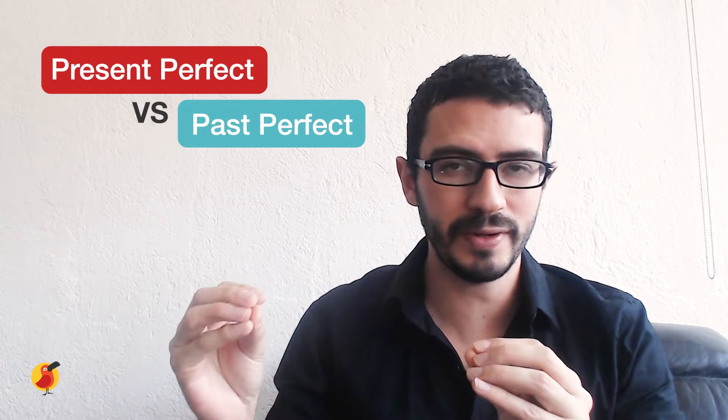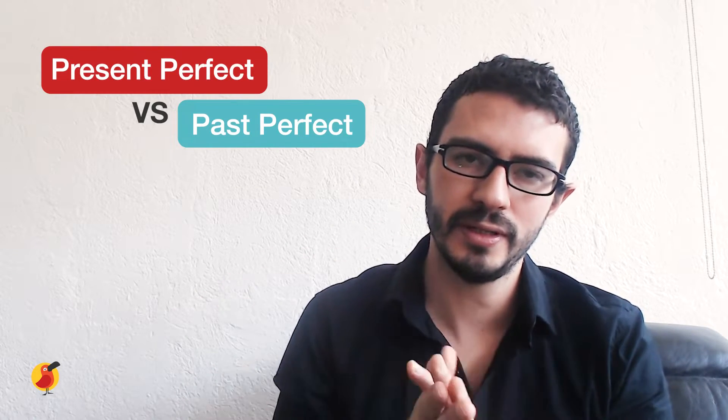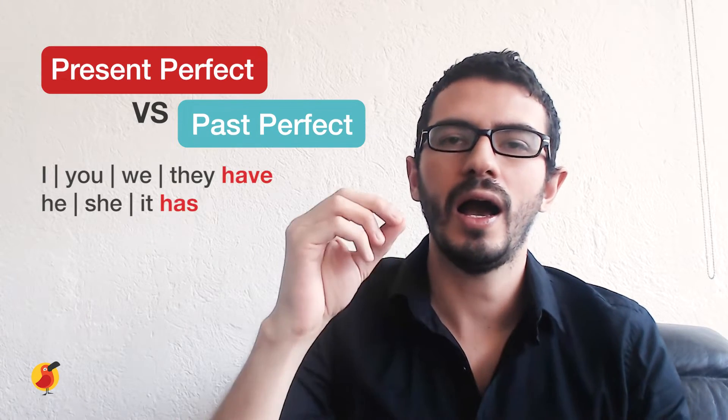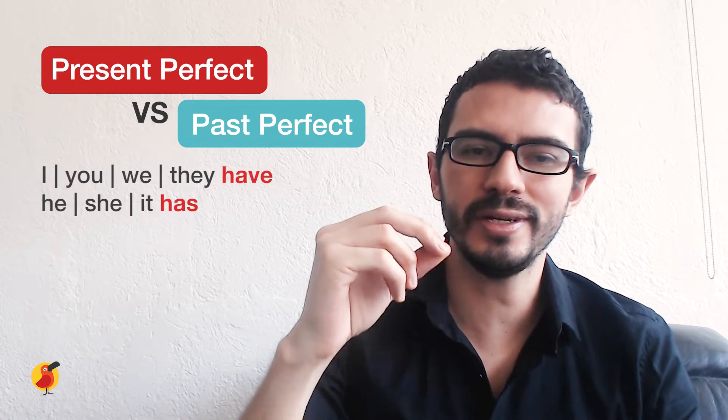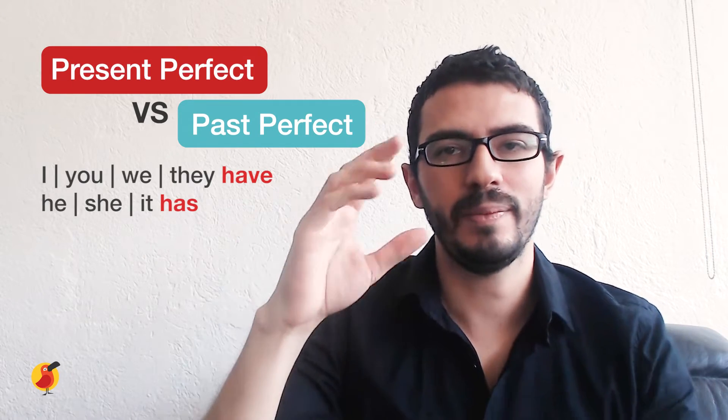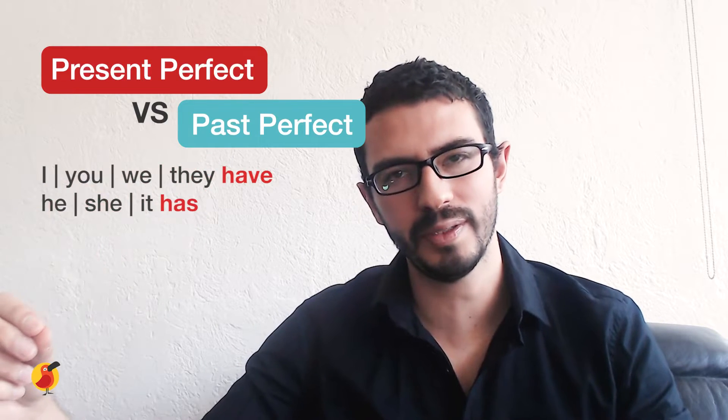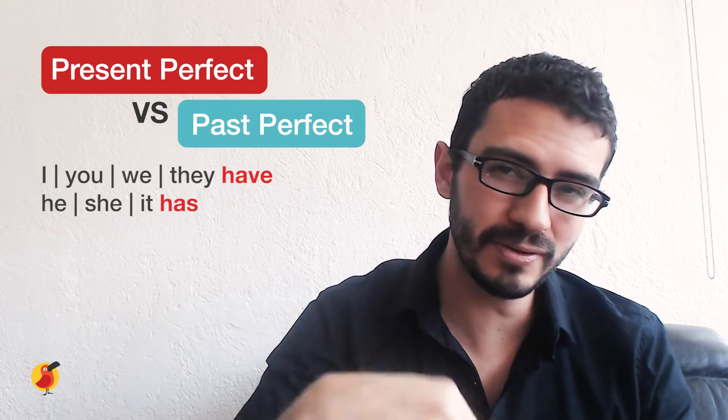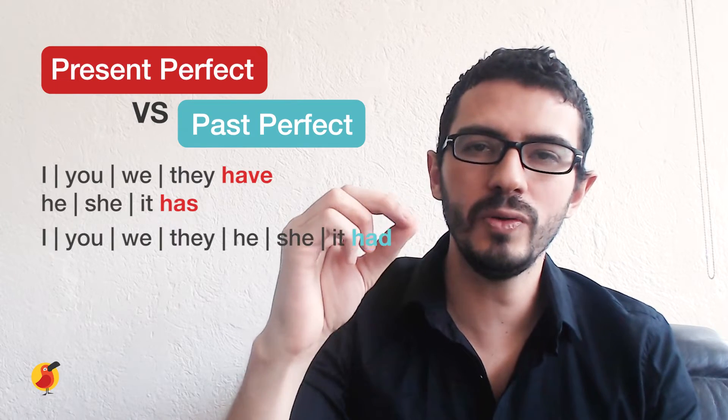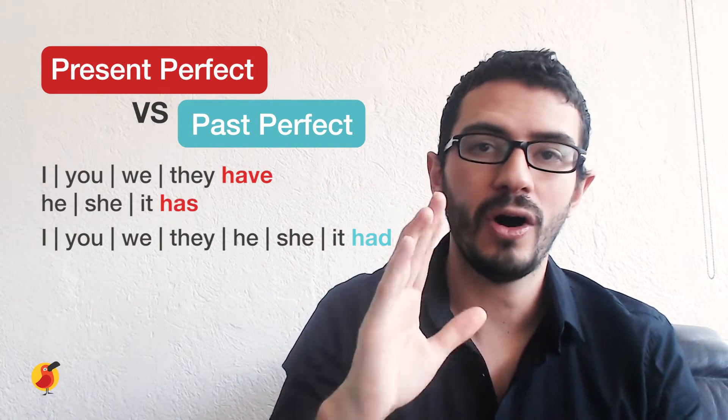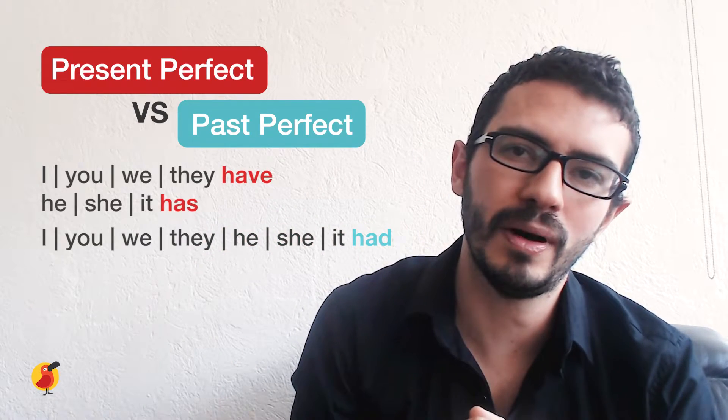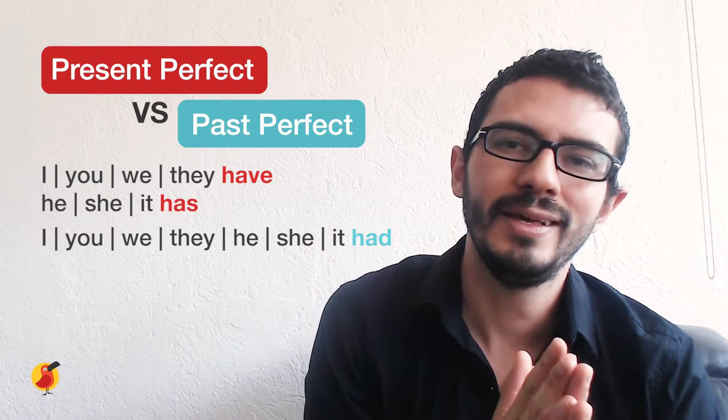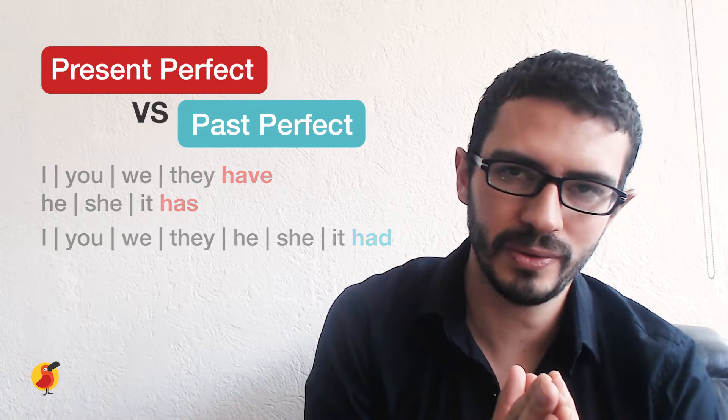So now we're going to see the main difference between the present perfect and the past perfect. So in the present perfect, you have I, we, you, and they have and he, she, and it has plus the past participle. But in the past perfect, you have I, we, you, they, he, she, and it all plus the had plus the past participle. So that is the main difference between both.